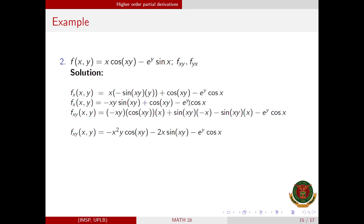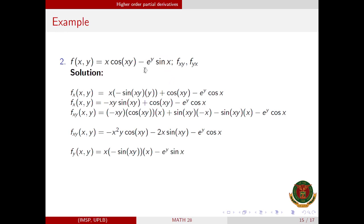Now for f_yx, the partial derivative of f with respect to y: x is a constant, so we copy that. The derivative of cos(xy) is −sin(xy) times x. Here, sin(x) is a constant and the derivative of e^y is e^y. Simplifying, we have this expression.